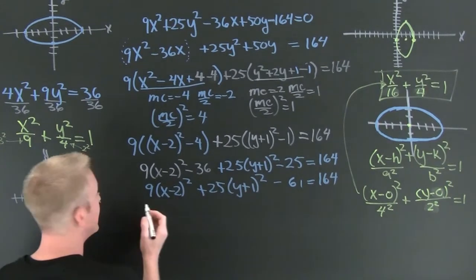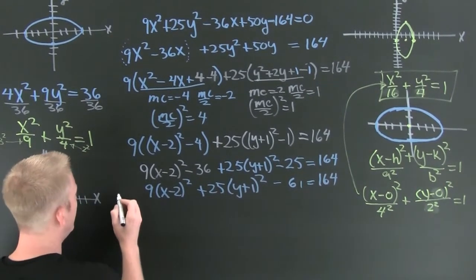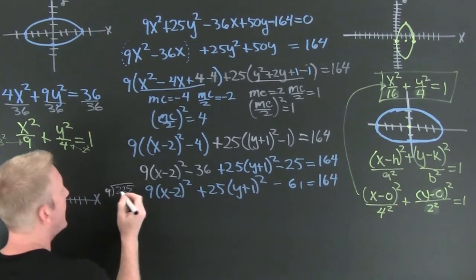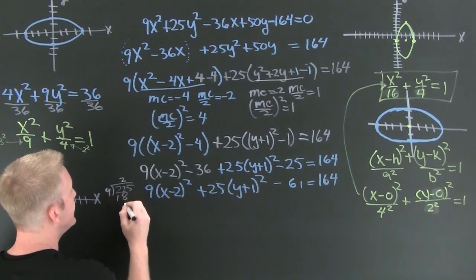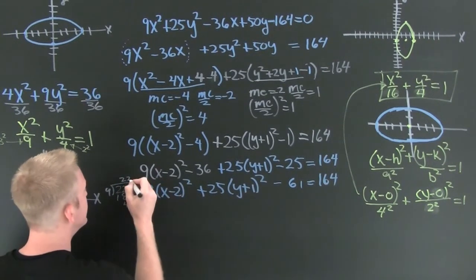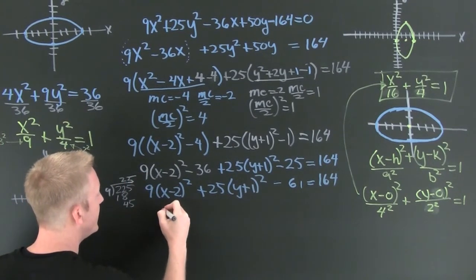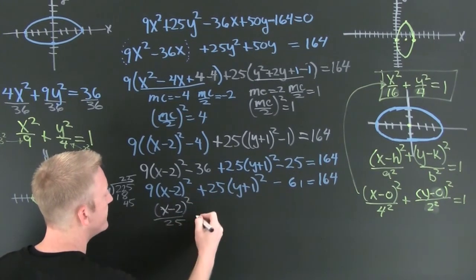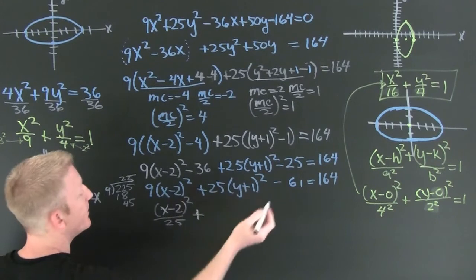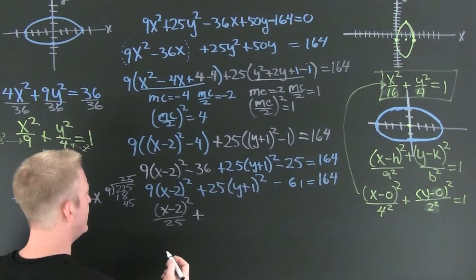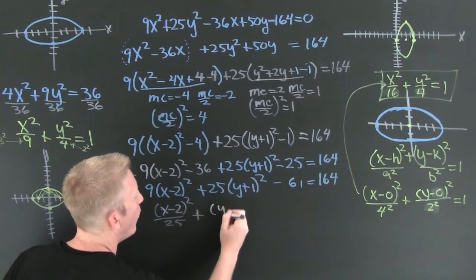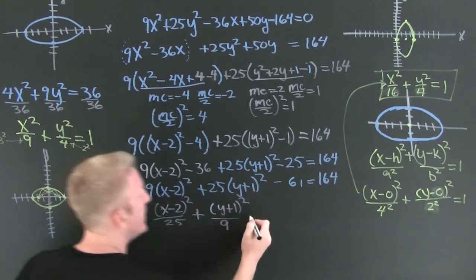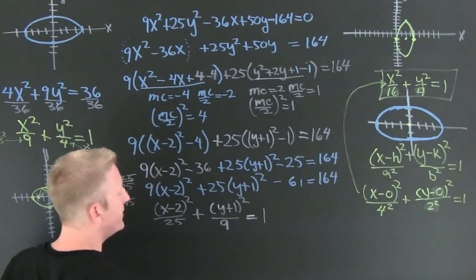So then, 9 divided by 225. Can I reduce that? 225 divided by 9. That's 25. So then this is gonna be x minus 2 squared over 25 plus then 25 divided by 225 is gonna be 9. Y plus 1 squared over 9. And then that's equal to 1. Very nice.